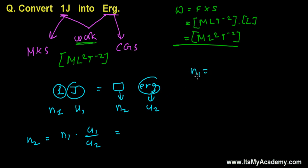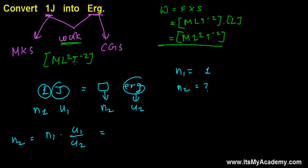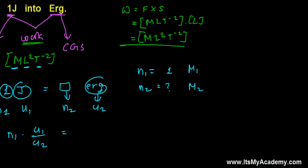All right here our n₁ is you know 1 and n₂ we don't know and units of work involves the physical quantities of mass length as well as time. So we need to write M₁, M₂ similarly we need to write L₁, L₂, T₁ and T₂. So n₁ as I told you it is MKS system. So in MKS system mass is measured in kilogram and in CGS system mass is measured in gram.